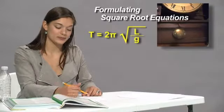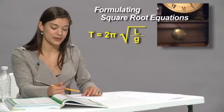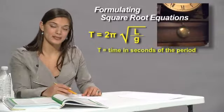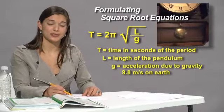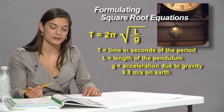T equals 2 pi times the square root of L divided by G. T is the time in seconds of the period. L is the length of a pendulum. And G is acceleration due to gravity, which is 9.8 meters per second on Earth.